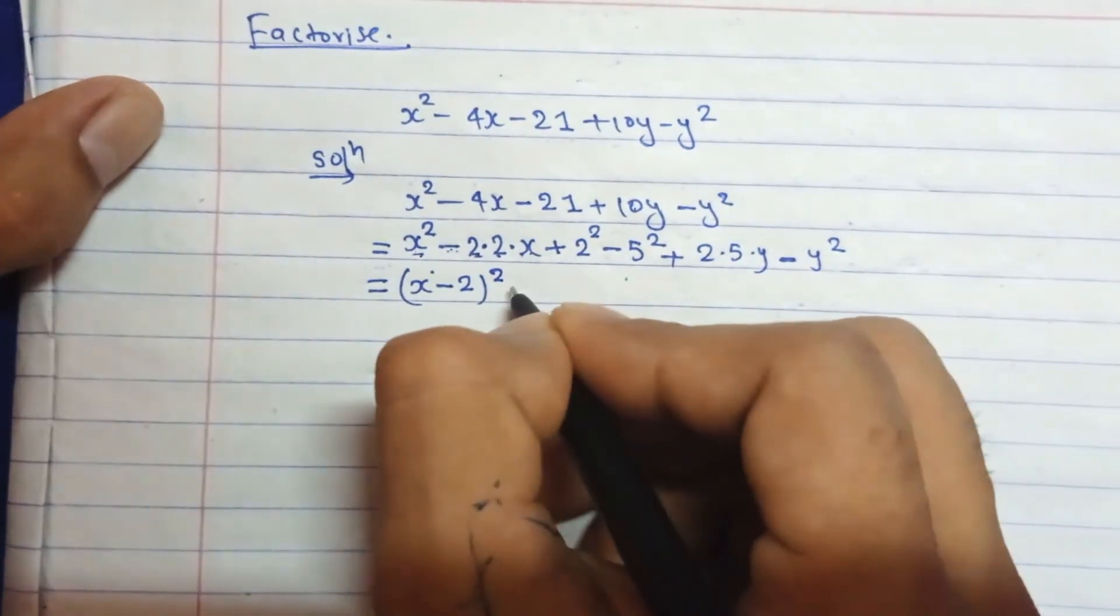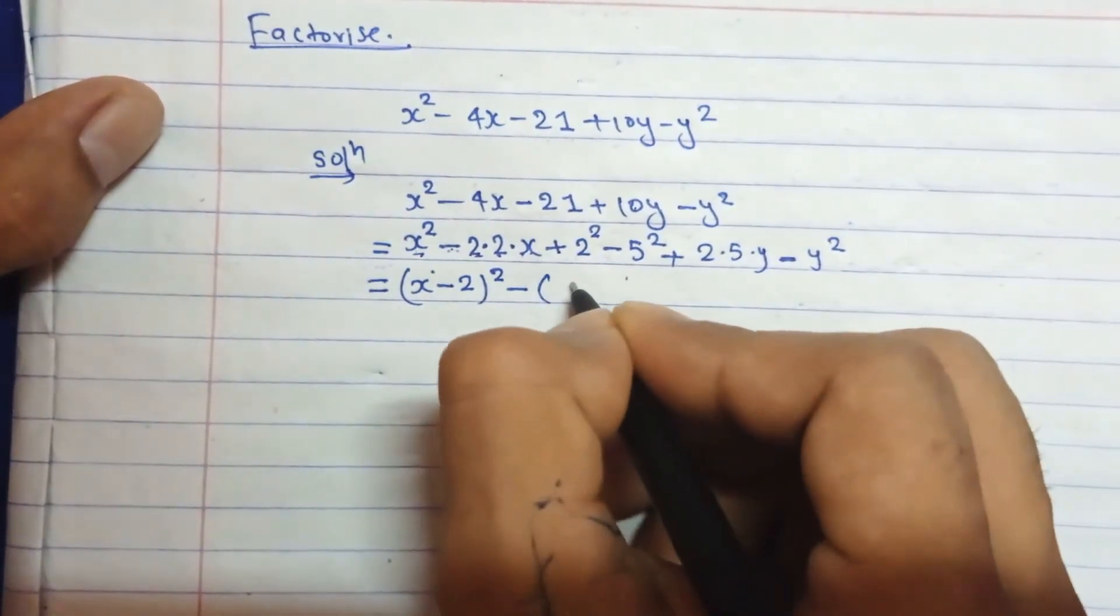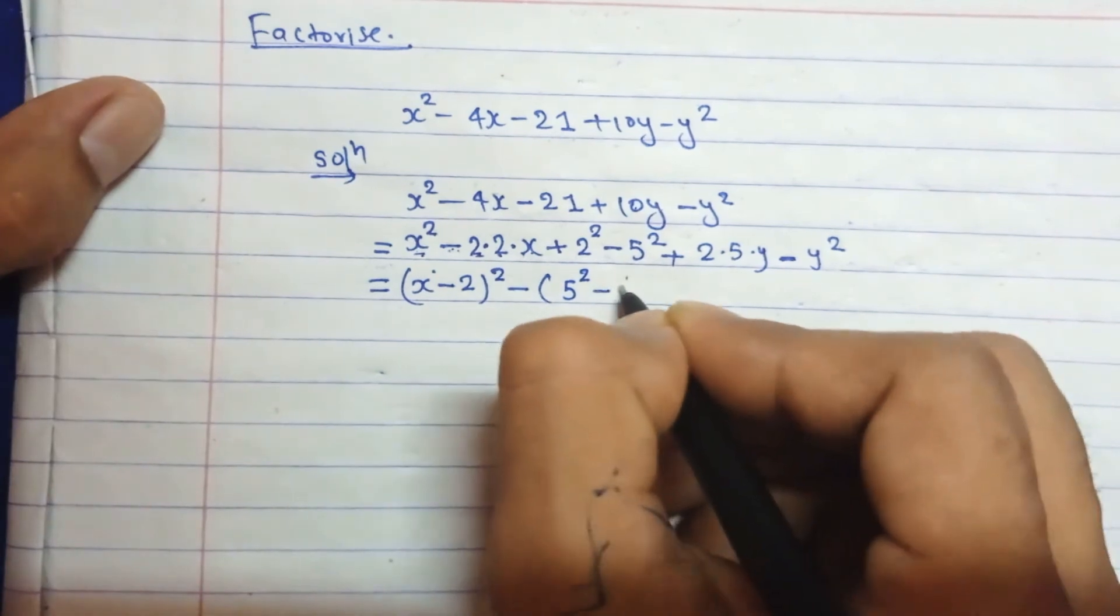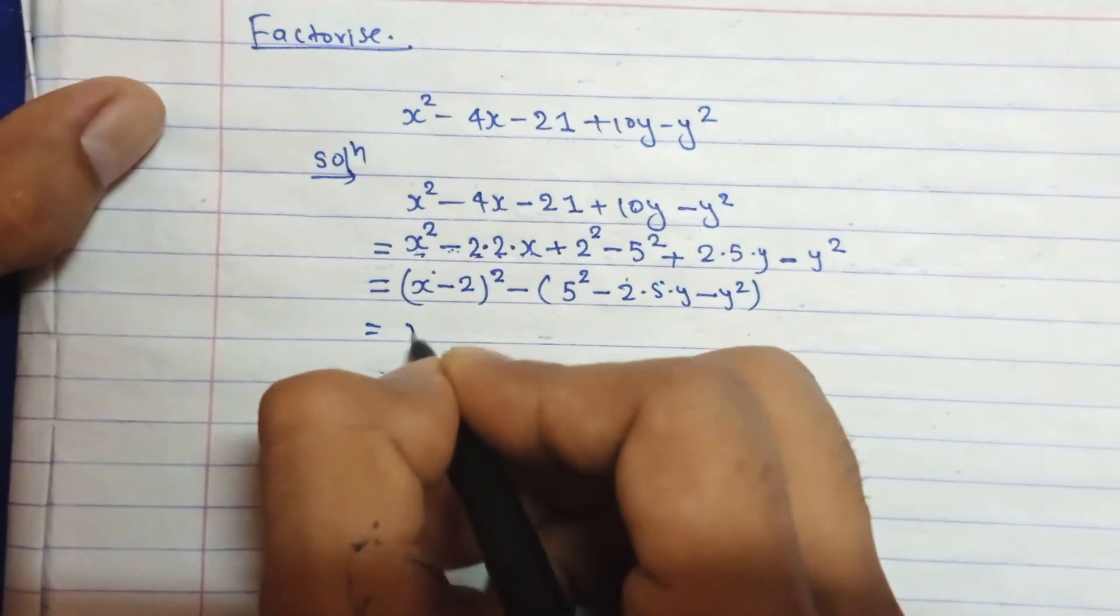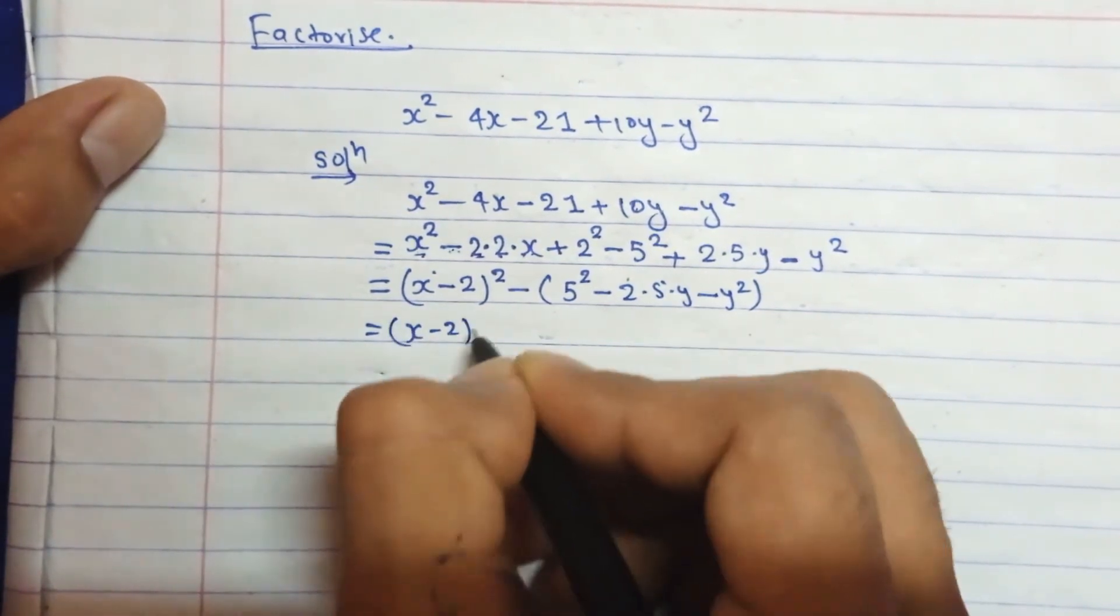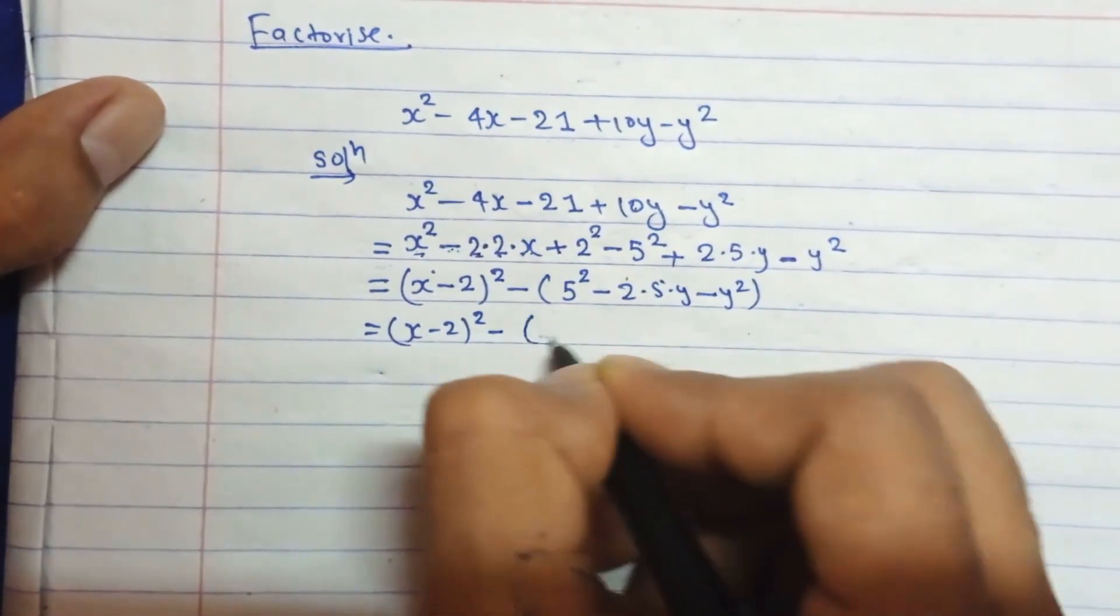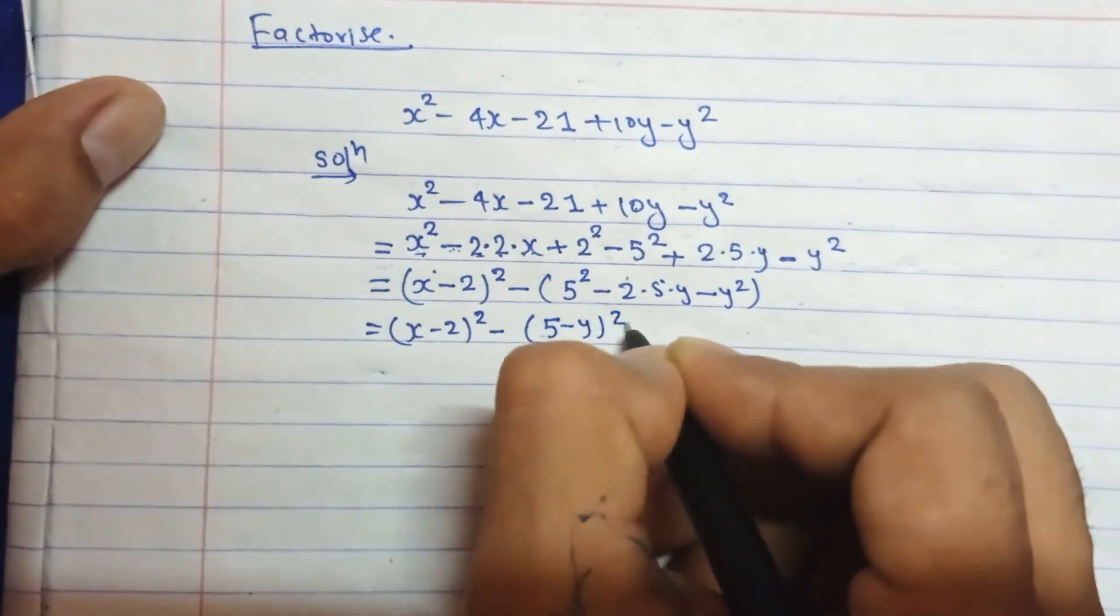For this term you can take minus common, it will be 5² - 2 times 5 times y - y². Then you can write here (x - 2)² - (5 - y)².